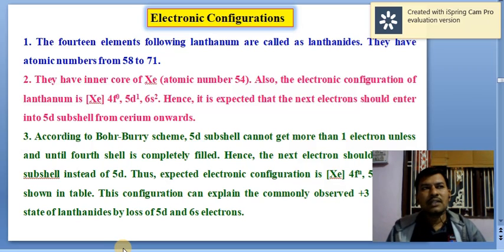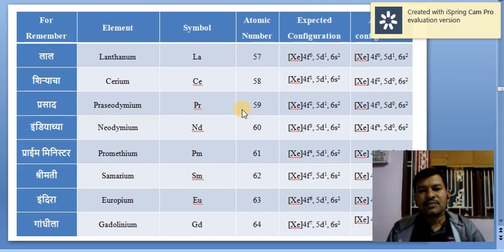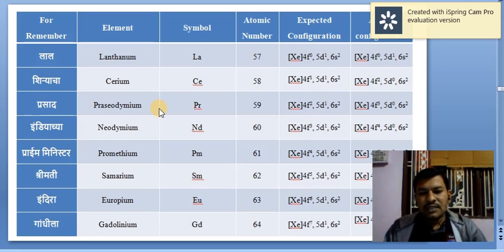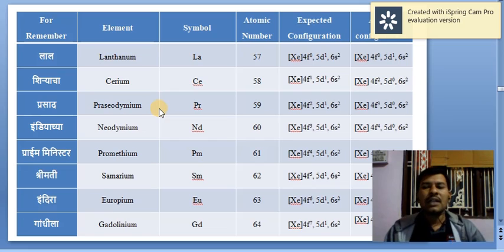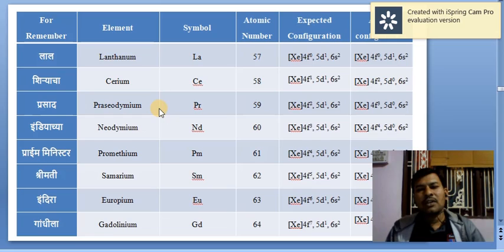In this lecture, we will discuss the electronic configuration of lanthanides. Electronic configuration is the distribution of electrons in an atom or molecule in atomic orbitals or molecular orbitals — it is only the distribution of electrons.